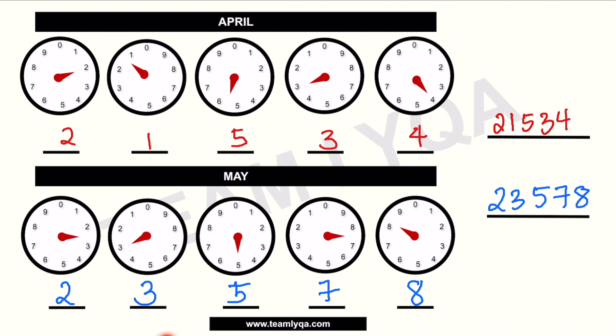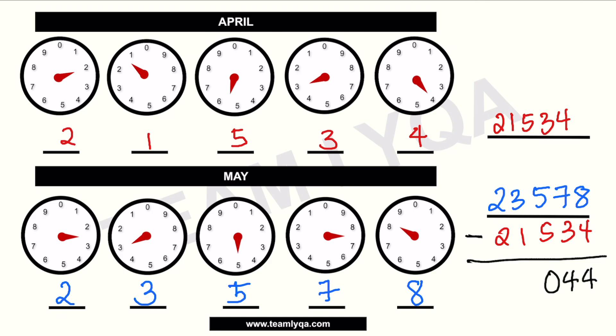Since May is more recent than April, and we want the consumption for the month of May, we subtract: 23,578 minus 21,534. That's classic subtraction: 8 minus 4 is 4, 7 minus 3 is 4, 5 minus 5 is 0, 3 minus 1 is 2, 2 minus 2 is 0. The difference is 2,044. That means during the month of May, you consumed 2,044 kilowatt hours.